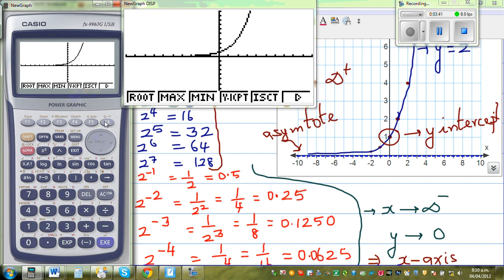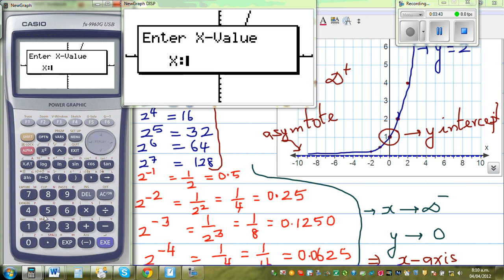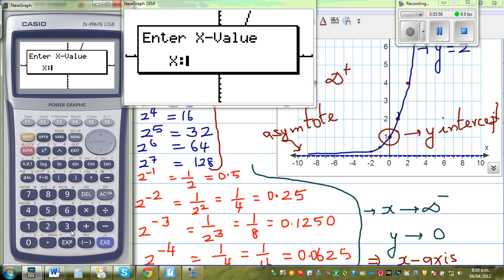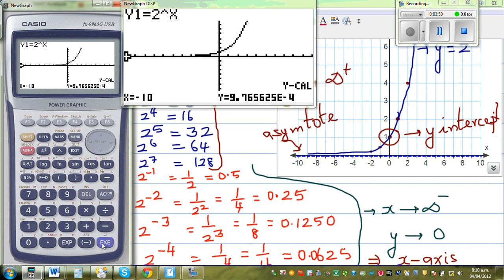Again gsol and let us take some negative values. When x is negative two. So can you see when x is negative two, y is 0.25. And let me go gsol and ycalc when x is negative ten. What will happen? This is 9.76 whatever times 10 to the power negative four. That's a very small number. It's almost zero.